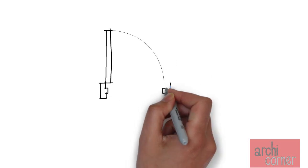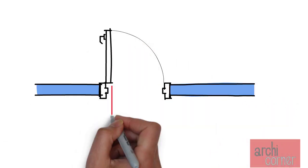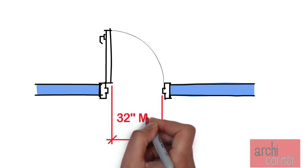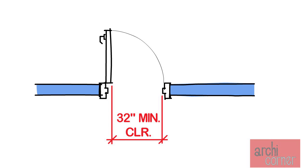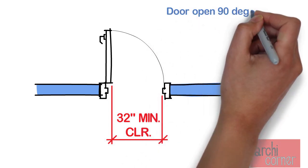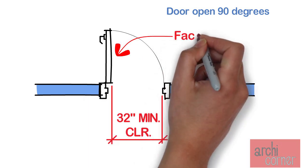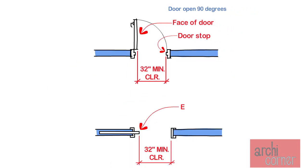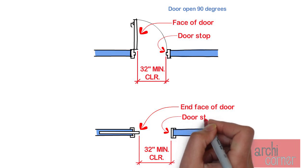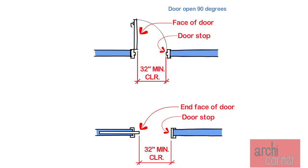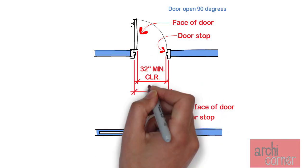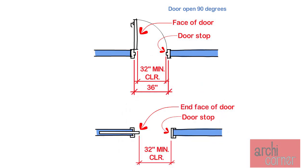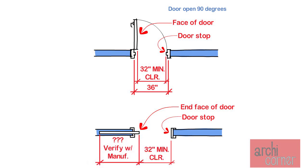Let's get the door sizes out of the way. This is pretty simple. First, let's talk about the width. Door openings need to provide a minimum clear of 32 inches. If this is a swinging door, the 32-inch clearance is measured when the door is in the open position at 90 degrees, measured between the face of the door and the doorstop. If this is a pocket door, it is measured between the end face of the door and the doorstop. This means the actual door width has to be more than 32 inches. In most commercial applications, 36-inch doors will be used for swinging doors. And for pocket doors, that's a bit difficult to say because each manufacturer is different, so be sure to coordinate that with the manufacturer.